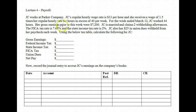JC works at Parker Company. JC's regular hourly wage rate is $13 per hour, and she receives a wage of one and a half times her regular hourly rate for hours in excess of 40 per week — in other words, she receives overtime if she works over 40 hours. For the week ending March 12th, JC worked 44 hours. Her gross earnings prior to this week were $7,200. JC is married and claims two withholding allowances. The FICA tax rate is 7.65% and the state income tax rate is 2%.